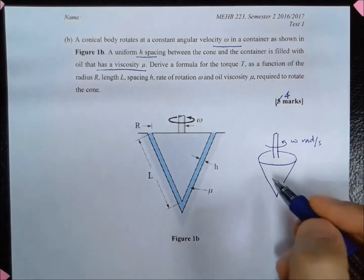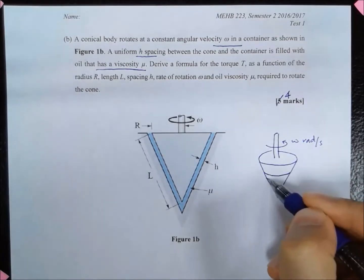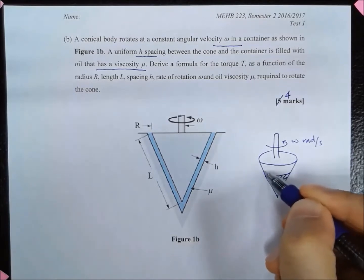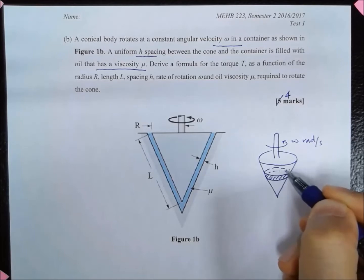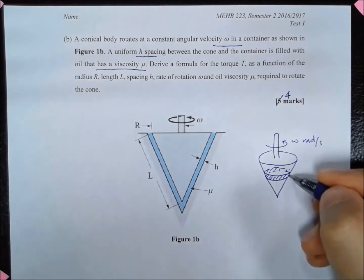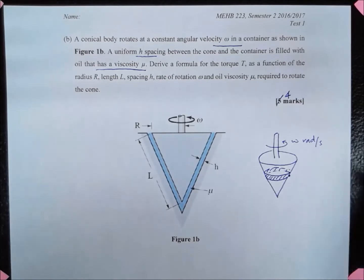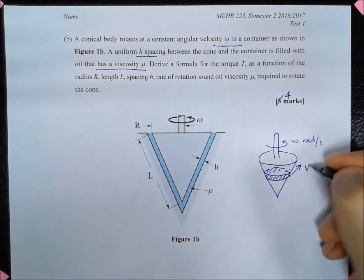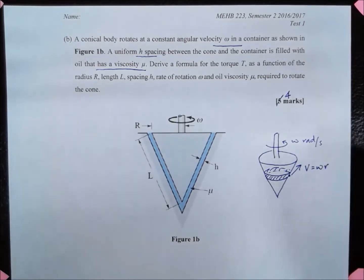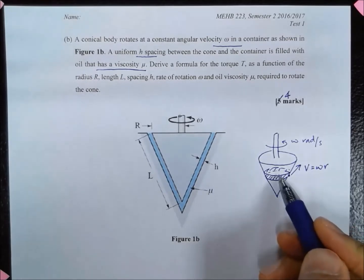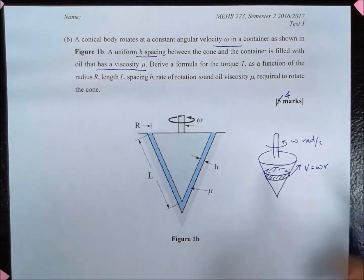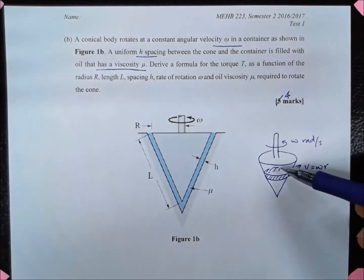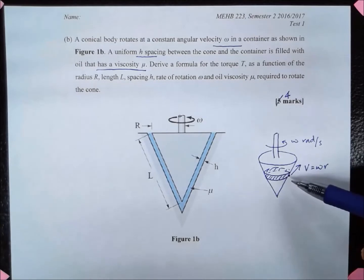If we consider an elemental ring here, if we take any point here, it will be rotating. The velocity there is actually equal to v, which is equal to omega r, where r is the radius between here and the axis of rotation. To calculate the torque, torque will be equal to force multiplied by the radius, and the force will depend on the shear stress at that particular point. The shear stress is equal to mu multiplied by the velocity gradient within the fluid.